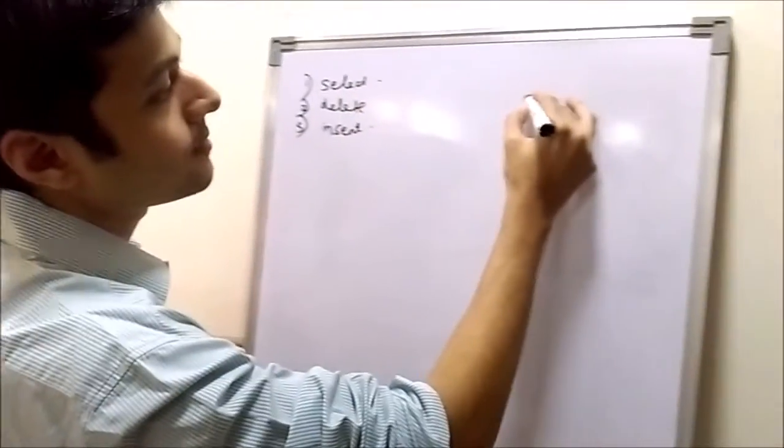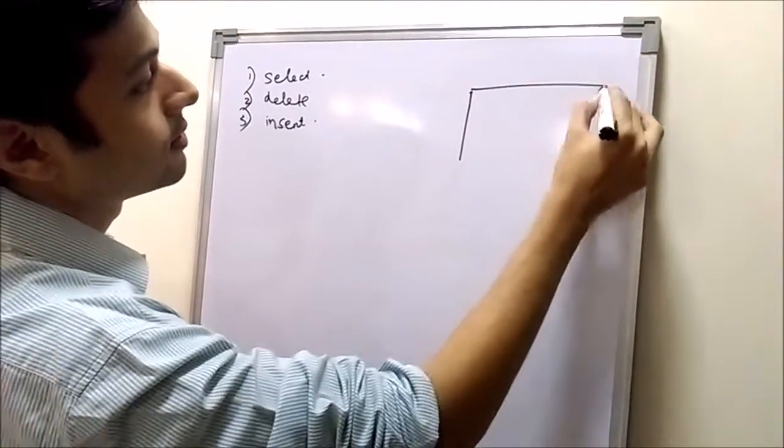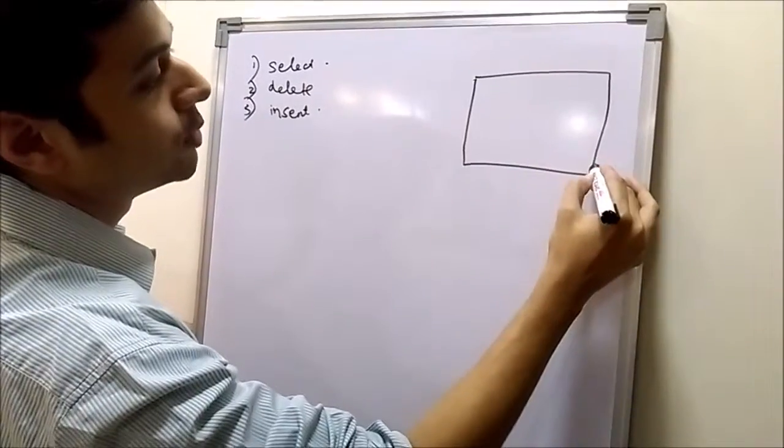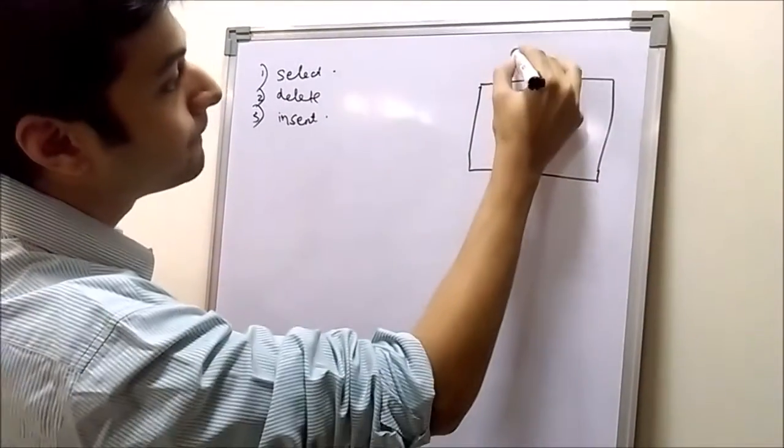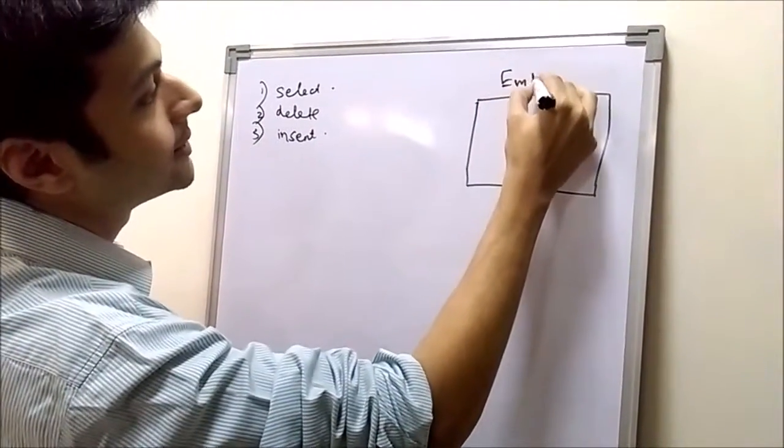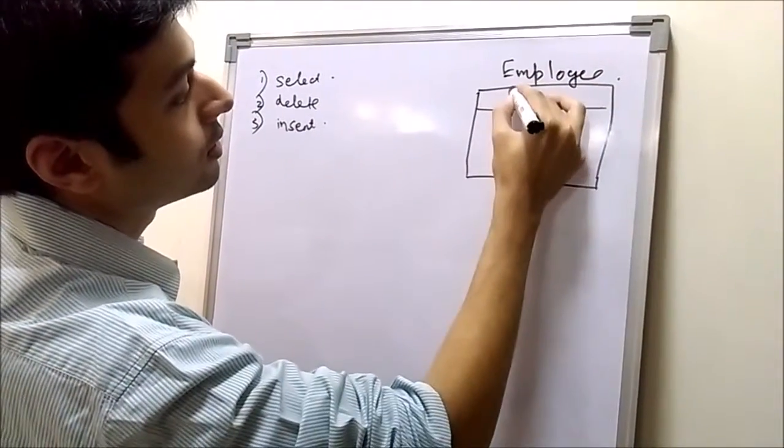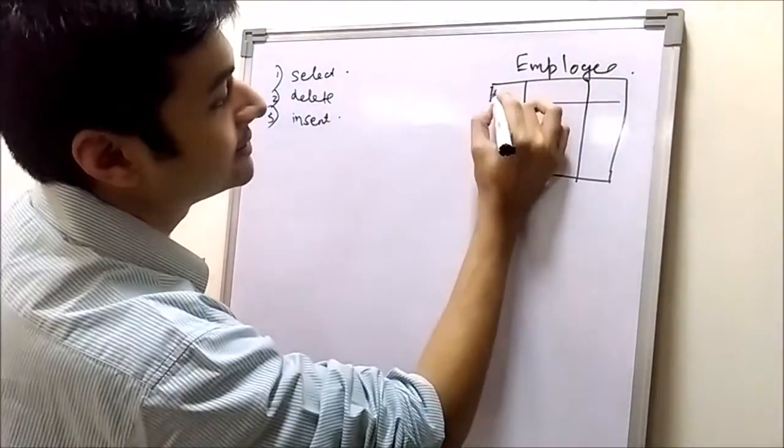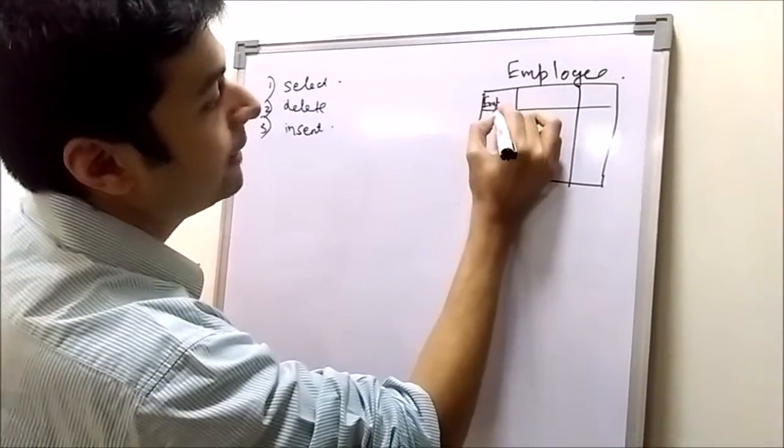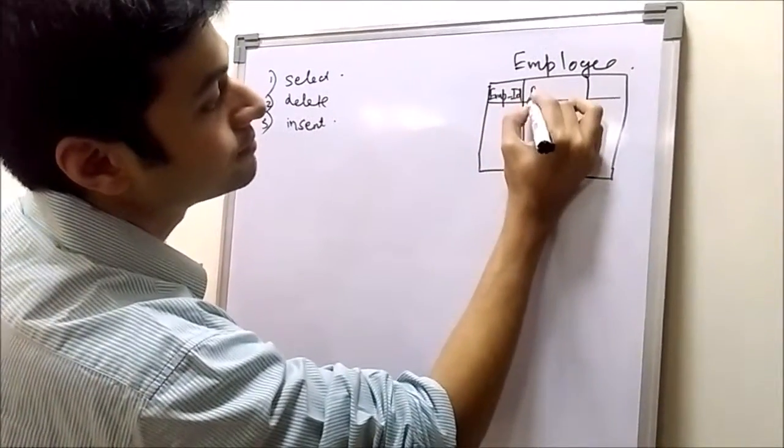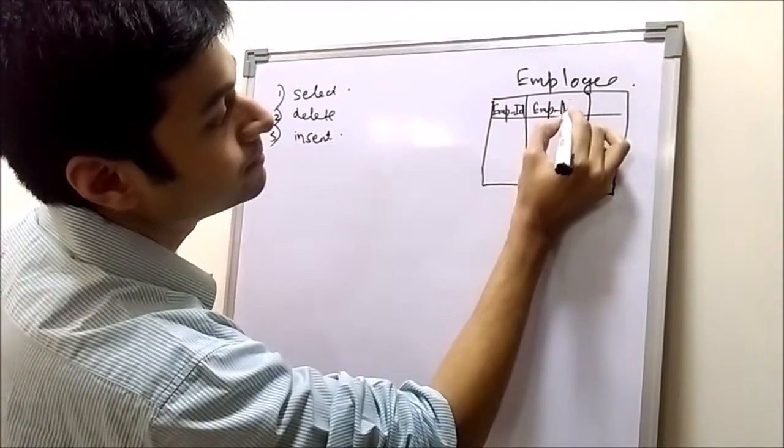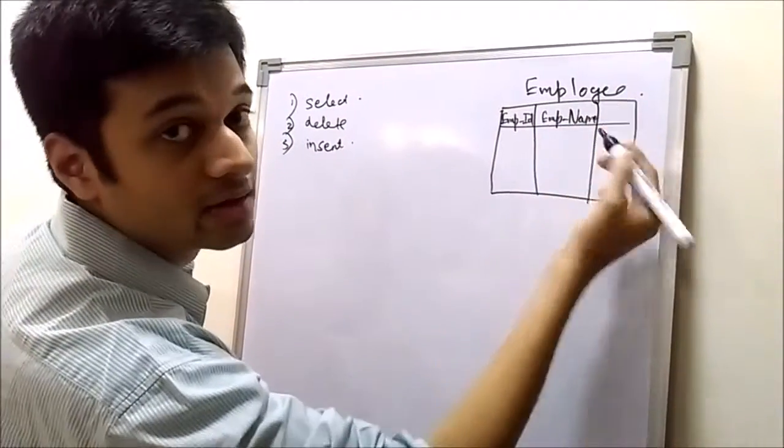Firstly we will draw a table, we will give the table name as Employee, we will write down the column names as empid, employee name, and years of experience.